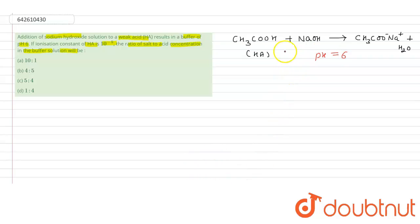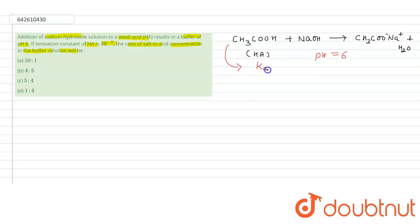The ionization constant of HA is given. The ionization constant Ka for the acid is equal to 10 to the power minus 5.